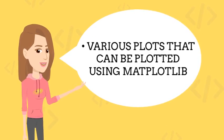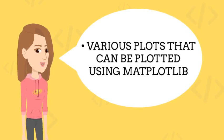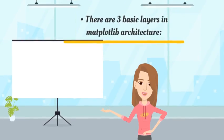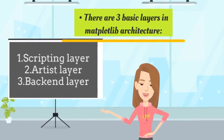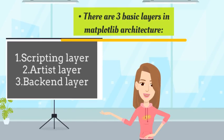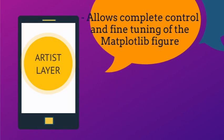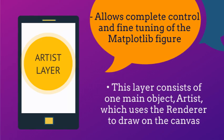There are various plots that can be plotted using Matplotlib. There are 3 basic layers in Matplotlib Architecture: Scripting Layer, Artist Layer, and Backend Layer. The Artist Layer allows complete control and fine tuning of the Matplotlib Figure. This layer consists of one main object, Artist, which uses the renderer to draw on the canvas.